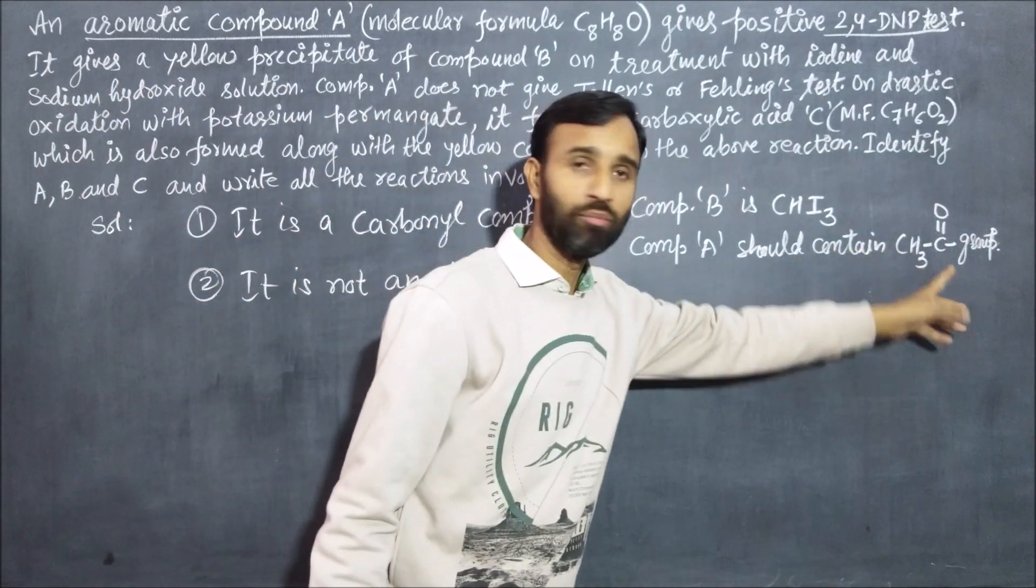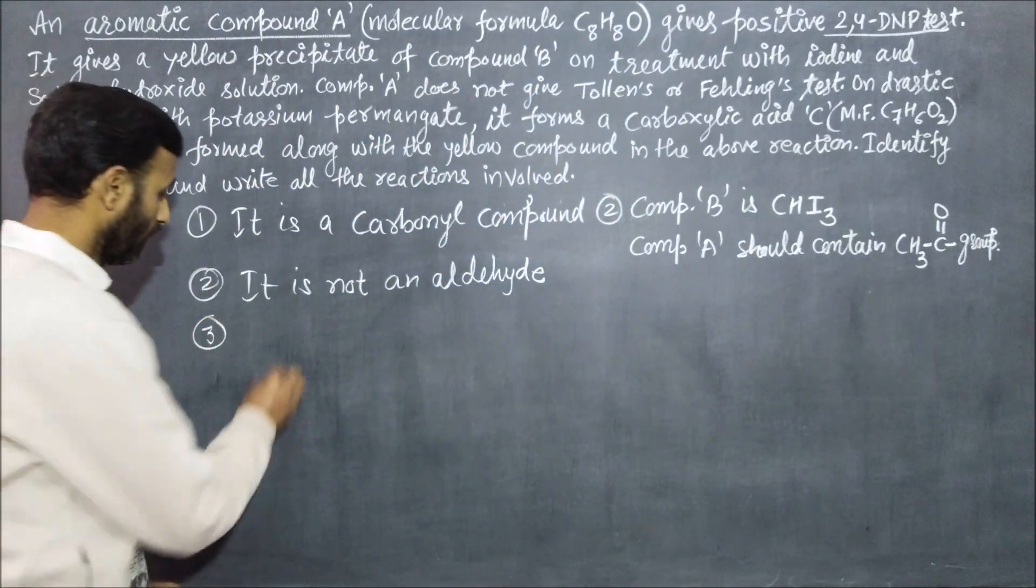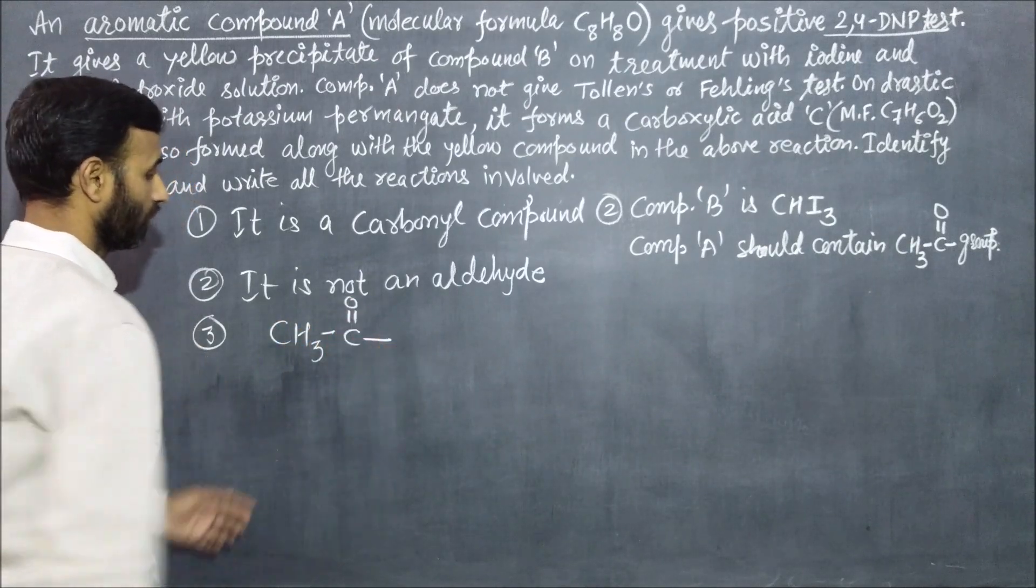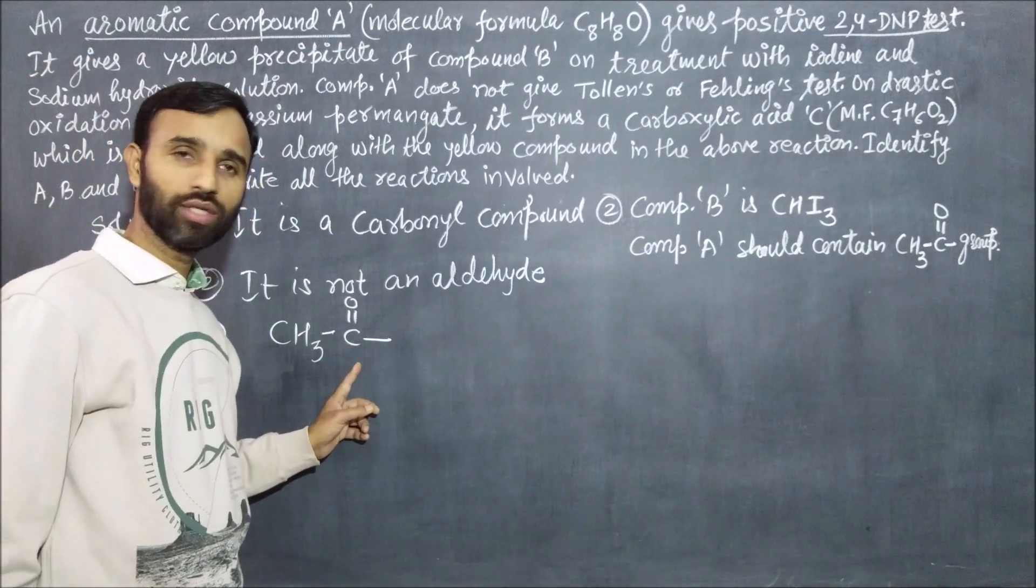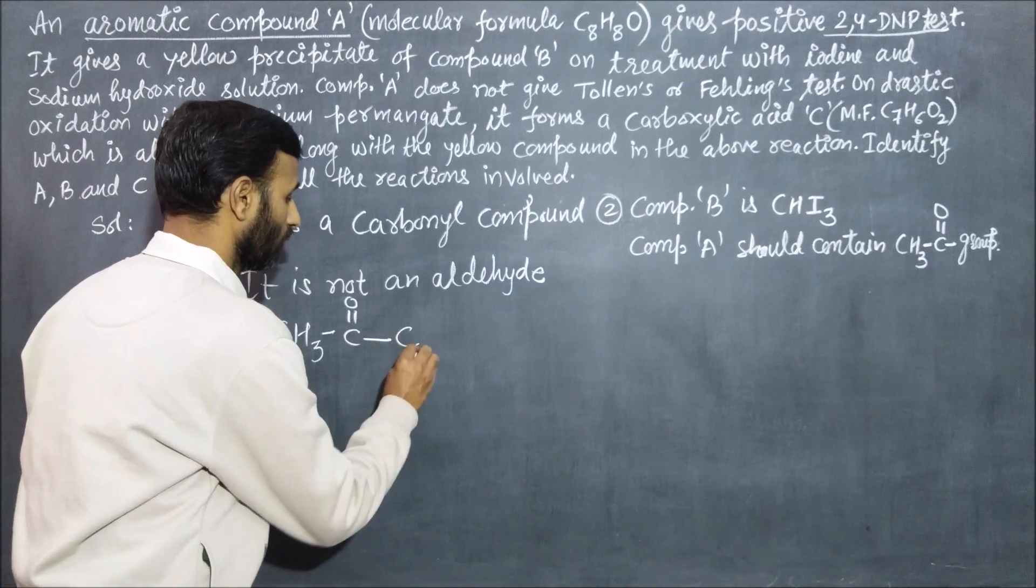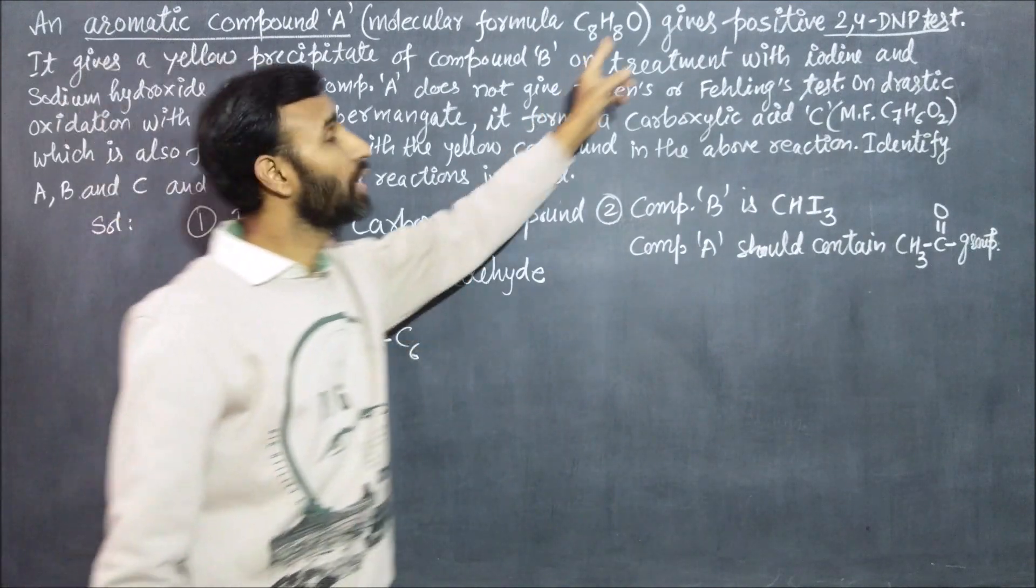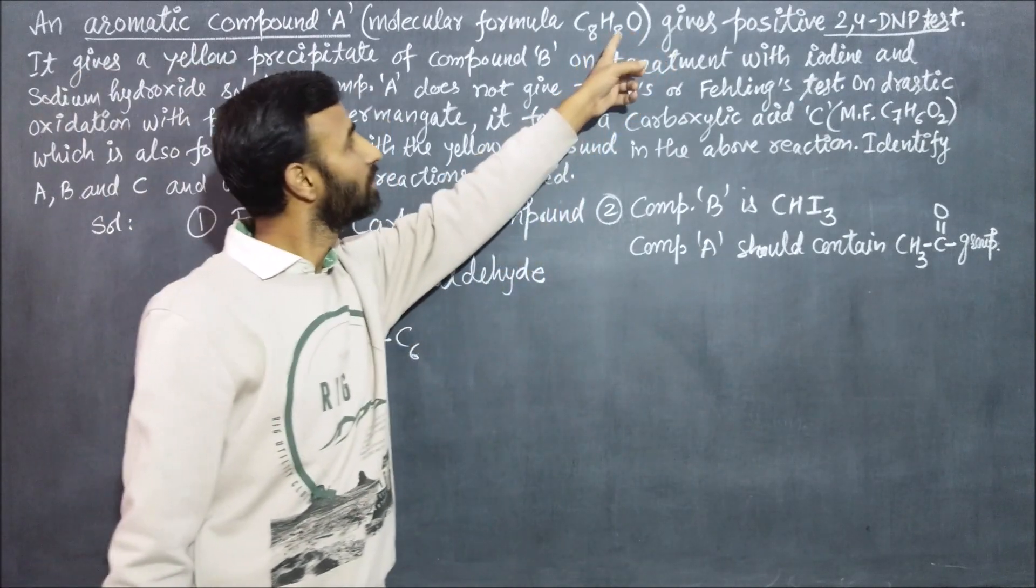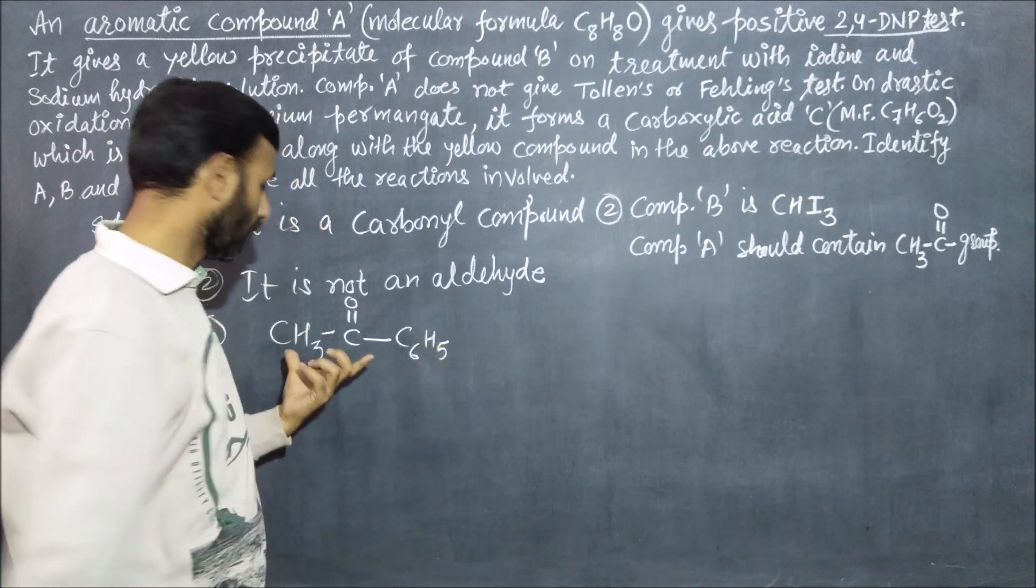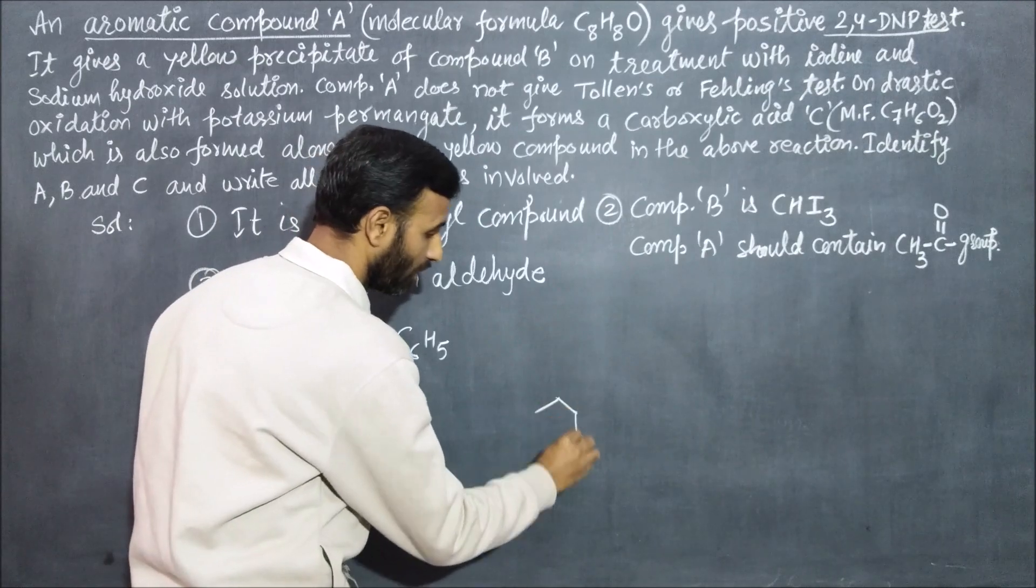Let us identify the formula. It contains CH3CO group. Two carbons are used, so six more remain. Three hydrogens are used out of eight, so five remain. This clearly indicates C6H5, which is a phenyl group attached to CO-CH3.